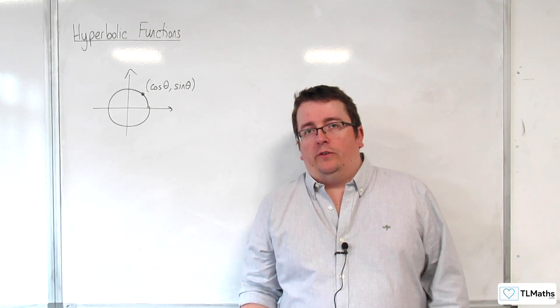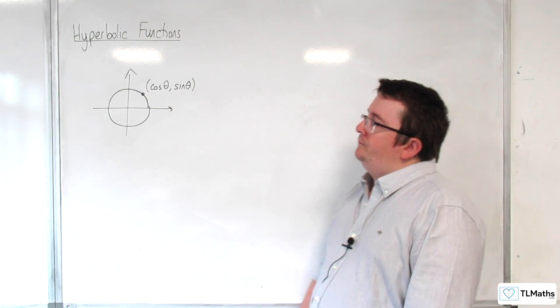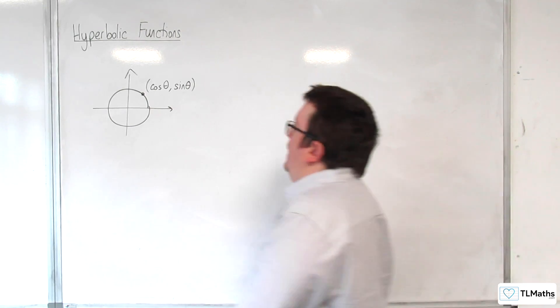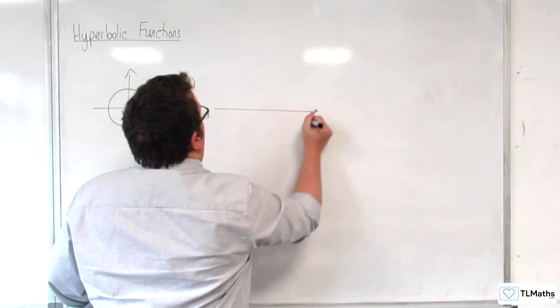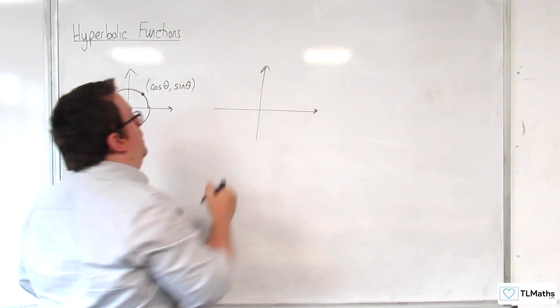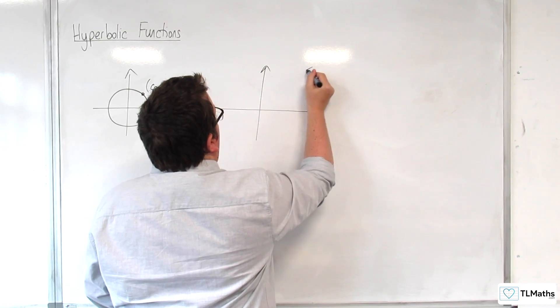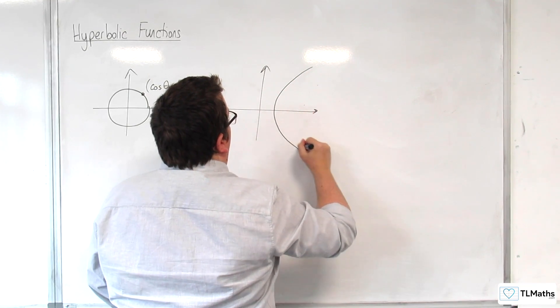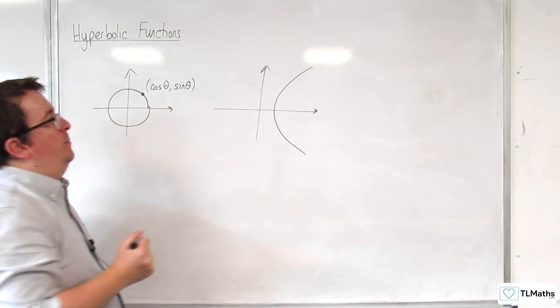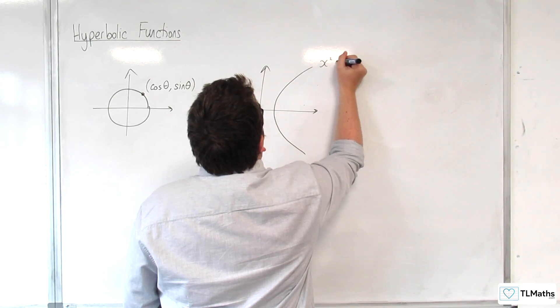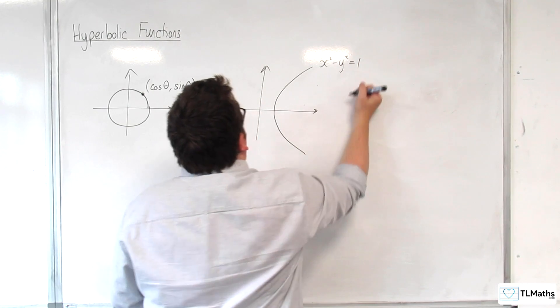So, the hyperbolic functions that we're going to introduce here are such that they can parameterize a hyperbola. So, here is the rectangular hyperbola, x squared minus y squared equals 1.